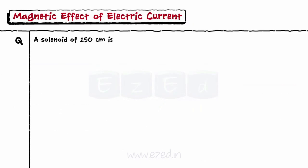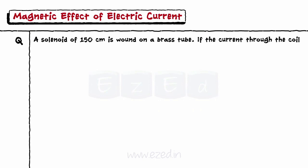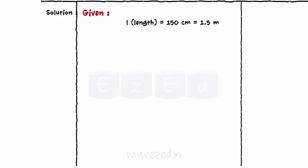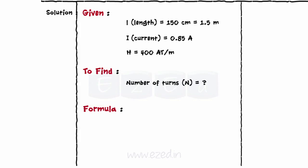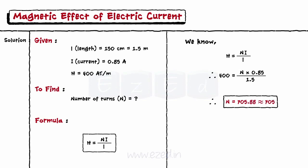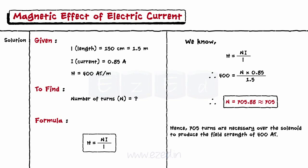A solenoid of 150 cm is wound on a brass tube. If the current through the coil is 0.85 Amperes, calculate the number of turns necessary over the solenoid to produce the field strength of 400 Ampere turns per meter at the centre of the coil. We have length L equals 150 cm, current I equals 0.85 Amperes, and field strength H equals 400 Ampere turns per meter. We need to find the number of turns N. Using the formula H equals N into I upon L and substituting the values, we get the value of N approximately equals 705 turns. Hence, 705 turns are necessary over the solenoid to produce the field strength of 400 Ampere turns per meter at the centre of the coil.